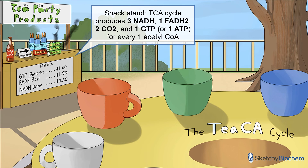This convenient snack stand will help you remember the products of the TCA Cycle. To the left, we start with 1-acetyl-CoA — or acetyl-Cola. To the right of the checkout arrow, we have 3 thirst-quenching NADH energy drinks, 1-FADH energy bar, and a triplicate of G-brand batteries. You'll also see two areas of black carbon dioxide smoke.